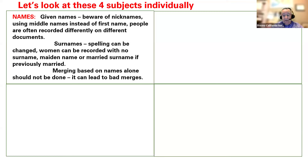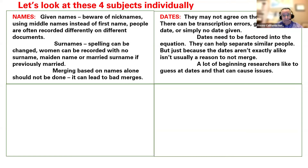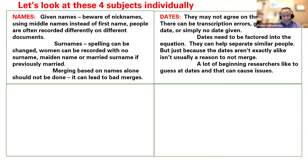If you use just names alone to do your merging, you're probably going to cause a lot of problems. So beware and look at the other factors. Dates don't always have to agree — it can be transcription errors. People could be guessing dates or maybe not even have a date for a fact or a person. Dates need to be factored into the equation, though. They can help separate similar people, but dates not being exactly alike doesn't give you a reason not to merge. Also, a lot of beginning researchers like to guess at dates, and that causes its own issues.